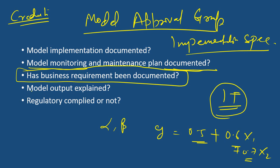In the model document, it is important whether the model output is explained — whatever output you get from the model should be explained properly. It is also important that the model validator checks that regulatory compliances are all met, and that the model and its documentation are also regulatory compliant. These are important things to keep in mind.